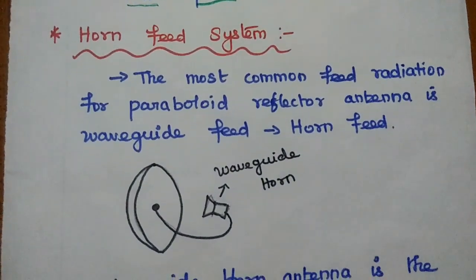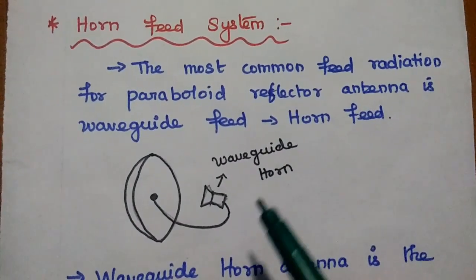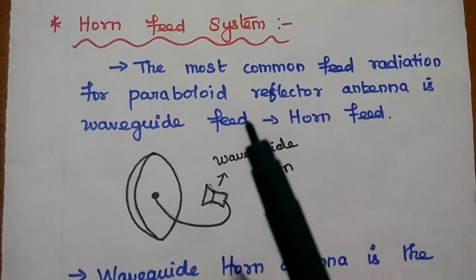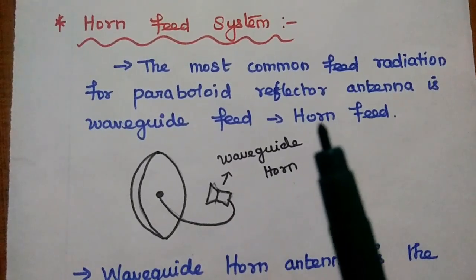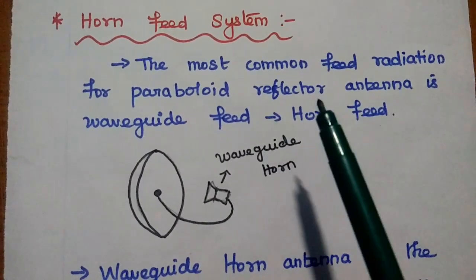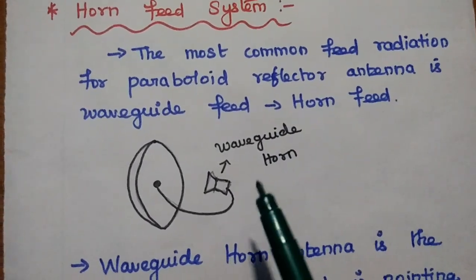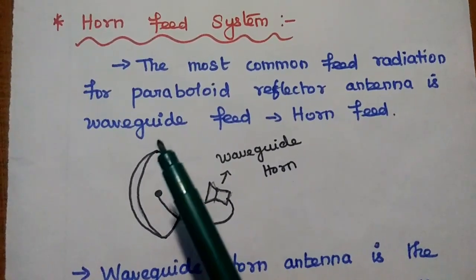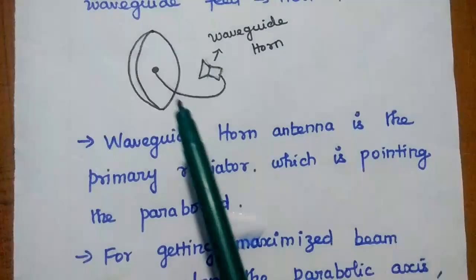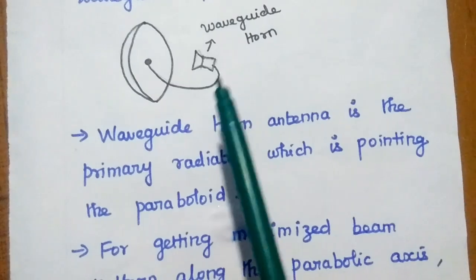The next one is the horn feed system, which is what we commonly see in dish antennas. The horn feed system is the most common feed radiation mechanism for paraboloidal reflector antennas. It is the most commonly used feeding system and is also called a waveguide feed or waveguide horn feed. In dish TV, there is one horn in front of the paraboloid reflector.